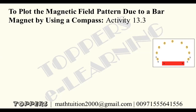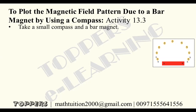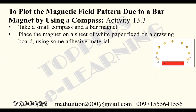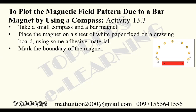How to plot the magnetic field pattern — field lines due to a bar magnet by using a compass. First, take a small compass and a bar magnet. Place the magnet on a sheet of white paper or fixed on a drawing board using some adhesive material.